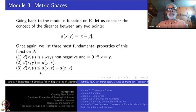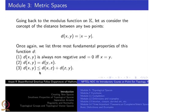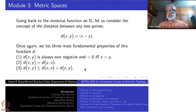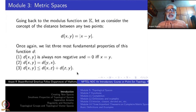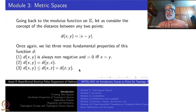The third property is the triangle inequality: the distance between x and y is less than or equal to the distance between x and z plus the distance between z and y. If x, y, z are three points forming a triangle, this says the length of any side — x to y — is less than or equal to the sum of the lengths of the other two sides, x to z and z to y.